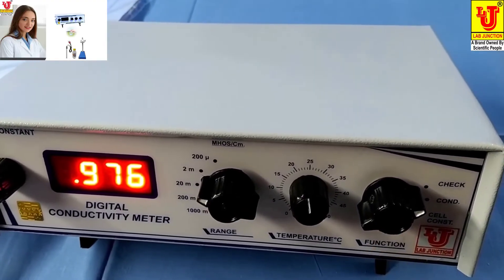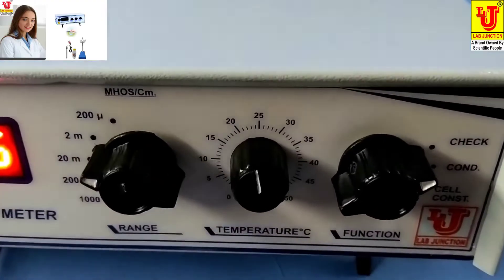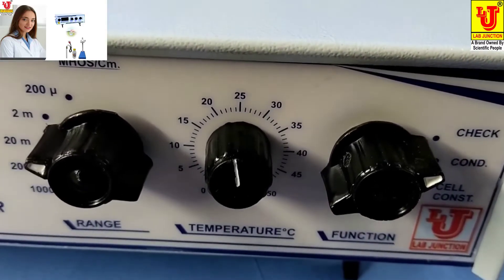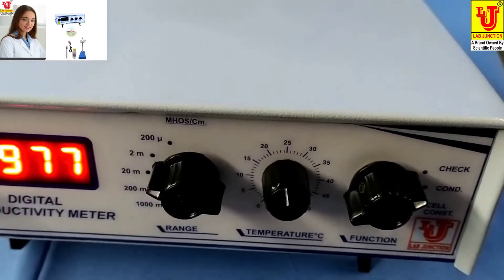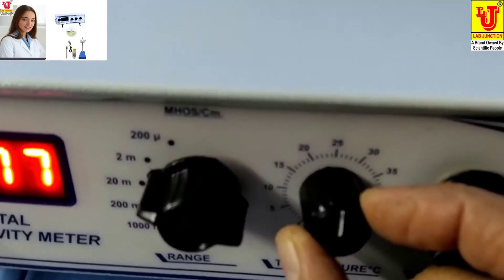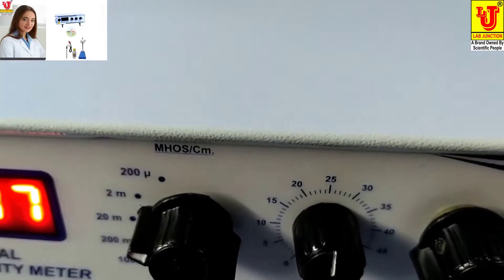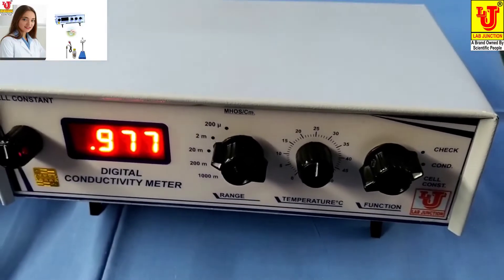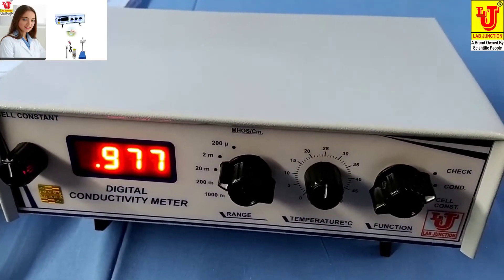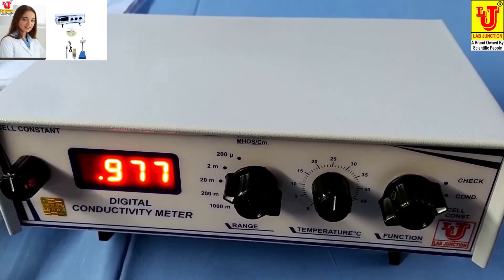In the function control, three positions are there: check, conductivity, cell constant. Now, first of all, you have to set temperature 25 degrees. If you have your own temperature, then you can set to your own temperature as you have desired your conductivity on that temperature.